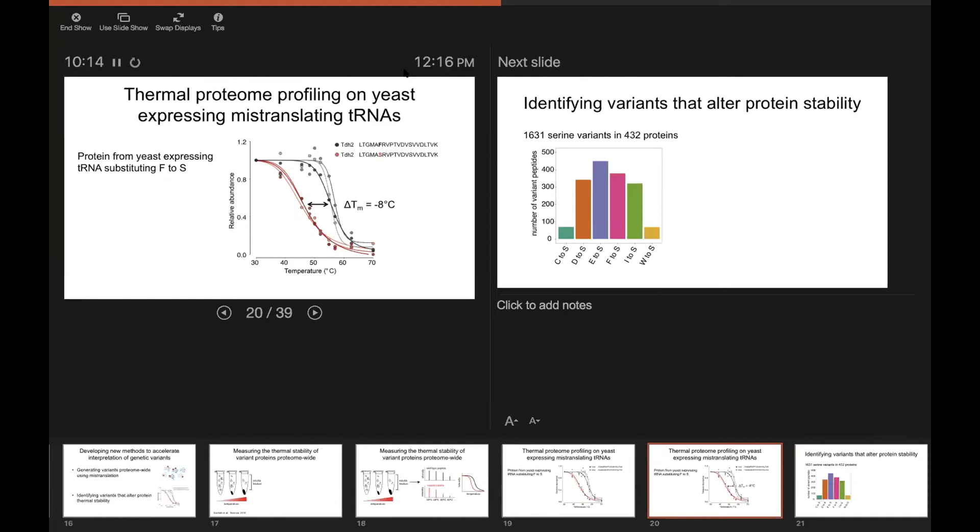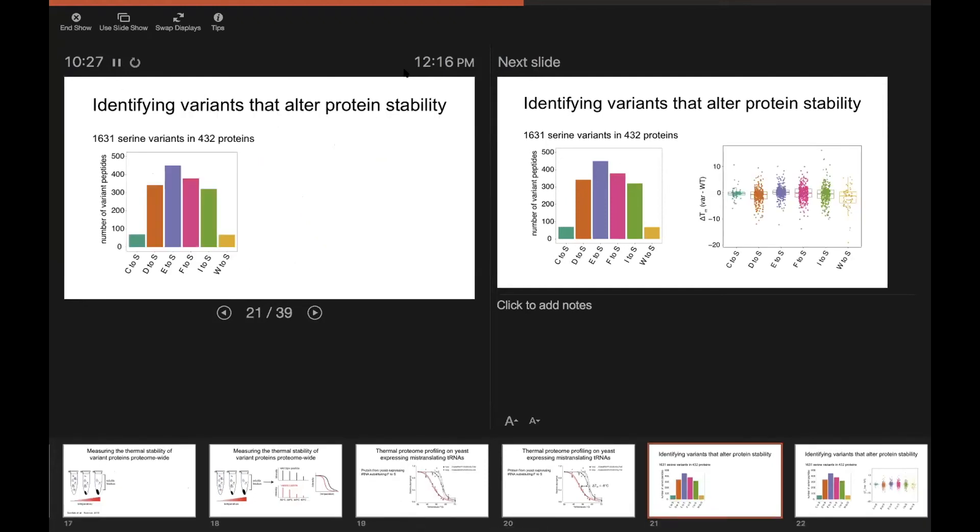So for every pair of these wild-type and mutant peptides that we detect, we can calculate a delta-TM value representing the difference between the wild-type and variant.